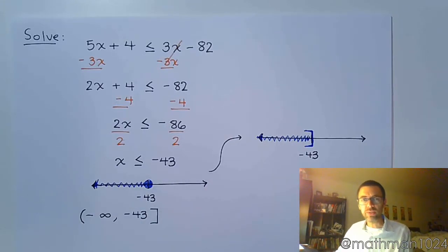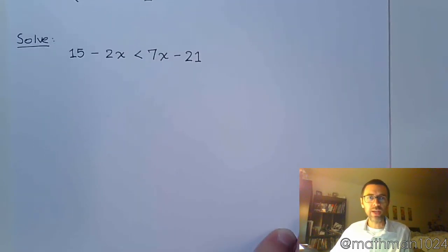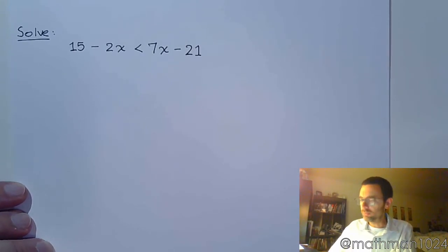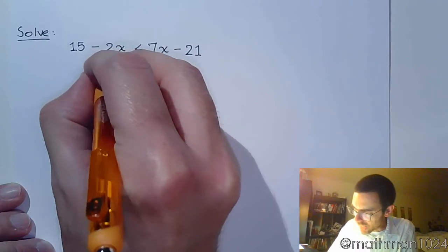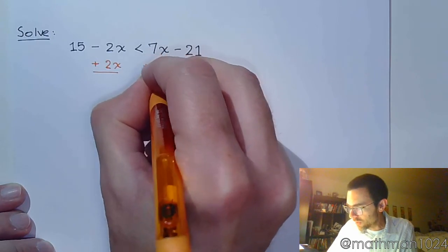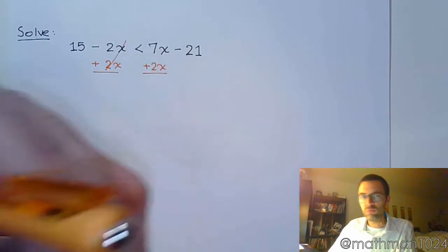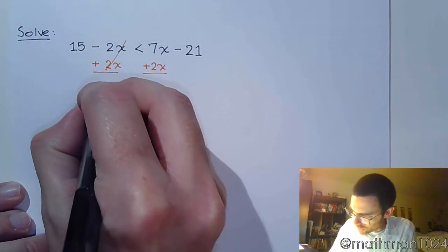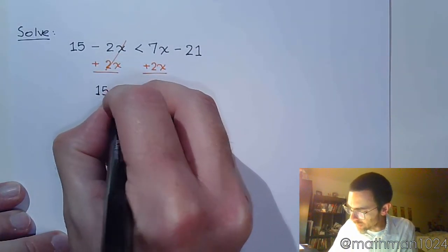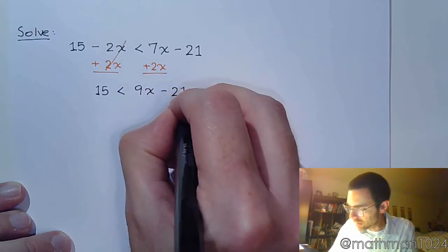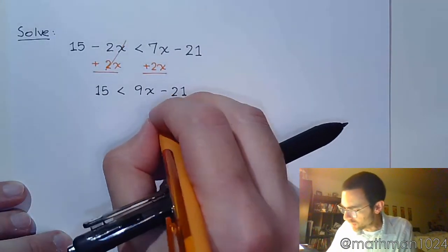Let's take a look at the next example. In the next example, we have 15 minus 2x is less than 7x minus 21. If we follow what we did above, you probably want to add 2x to both sides because by doing so, that gives you a positive coefficient for your variable term, which is almost always a good thing.